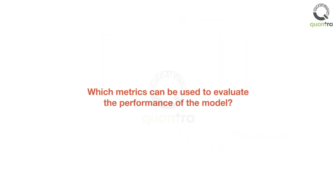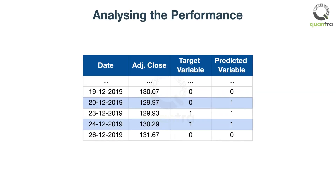Which metrics can be used to evaluate the performance of the model? Rob can compare the predictions of the ML model with what actually happened on those days. If the predictions match what actually happened, then the ML model is very effective. For example, the ML model predicted a signal of 1 on the 23rd of December 2019, meaning the price would increase from the 23rd to the 24th of December. He checks the prices and, sure enough, it had increased — the ML model was correct in predicting the price move.